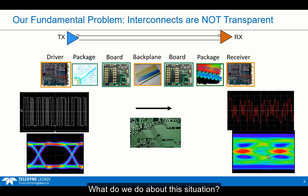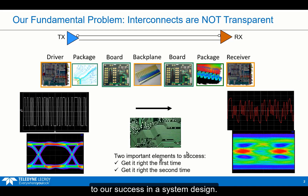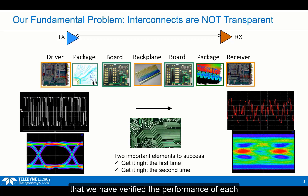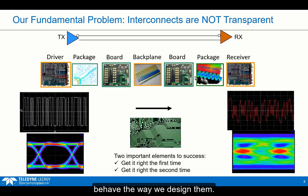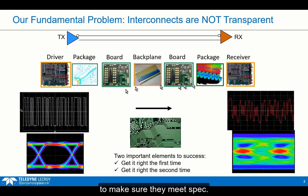What do we do about this situation? How do we assure that the signal at the receiver doesn't look like this? There are generally two important elements to our success in a system design. The first element is we want to get it right the first time — design it right so you have confidence it's going to work. Part of designing it right means we have verified the performance of each of the components, verified that the as-manufactured parts behave the way we designed them — in other words, that they meet spec. Getting it right the first time is really about characterizing the components to make sure they meet spec.